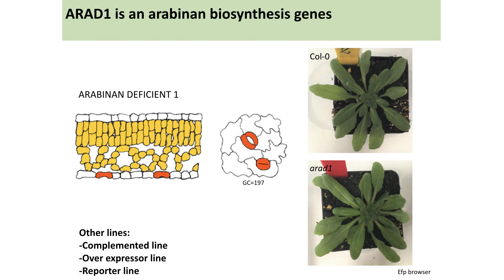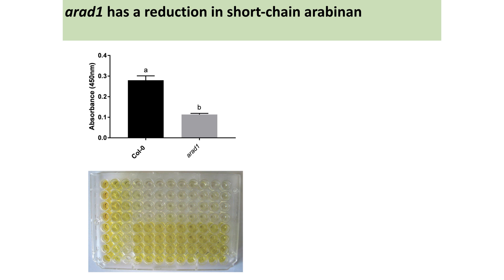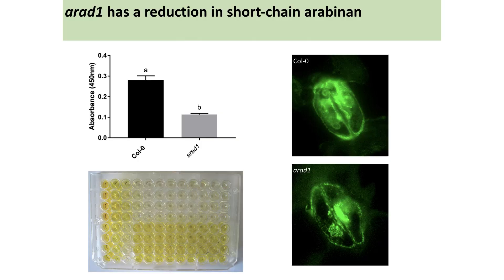We confirmed that the arad1 knockout line actually has reduced arabinan using an ELISA-like technique: we take a whole leaf, grind it up, extract the cell wall into a 96-well plate, then add primary antibody, secondary antibody, and a substrate that changes color depending on how much of the cell wall component is present. Darker yellow indicates more of that component. The arad1 mutant has significantly less short-chain arabinan than the control, and closer inspection of guard cells confirms reduced signal in arad1 for short-chain arabinan.